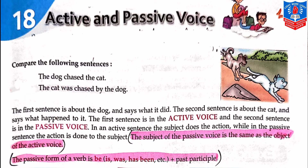The subject of passive voice is the same as the object of active voice. As you have seen, in the first sentence, the subject was 'dog' and at the object's place was 'cat'. When we convert to passive voice, the subject of the passive voice is the object of the active voice. In the first case, 'cat' was at the object's place, and when we changed it to passive, 'cat' became the subject.